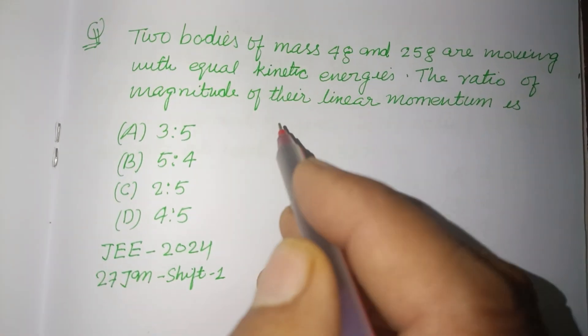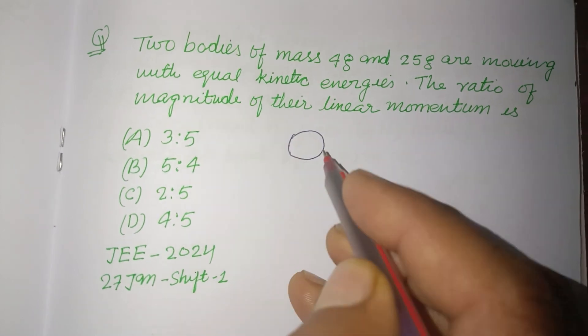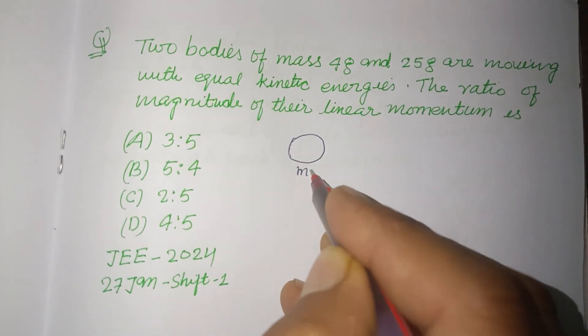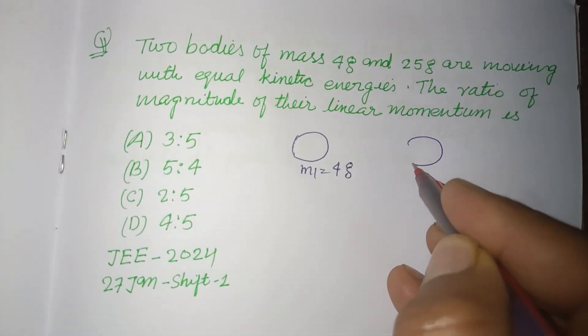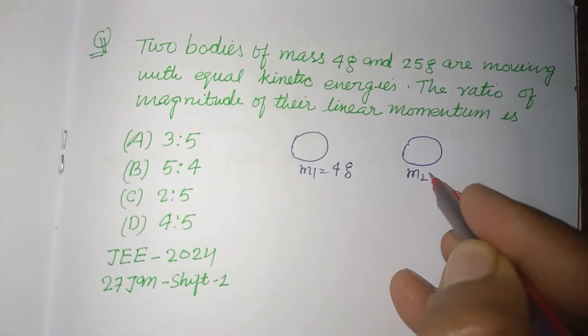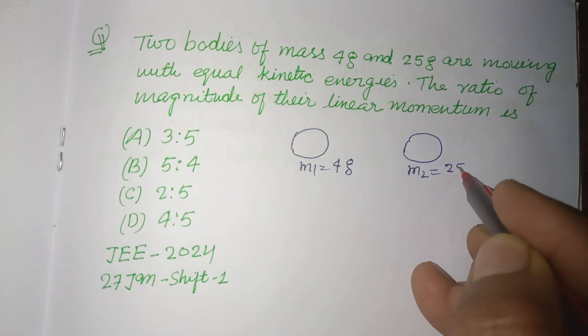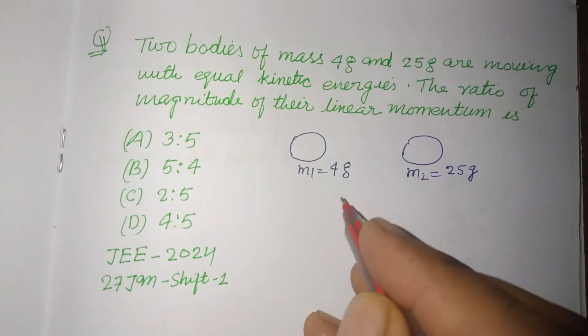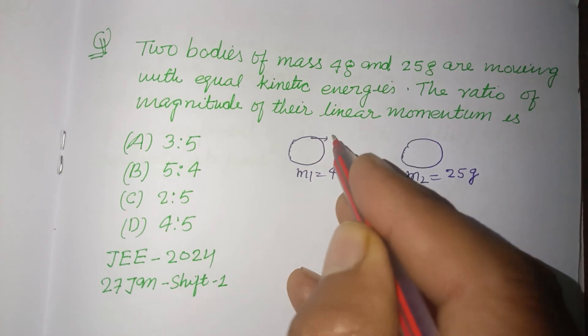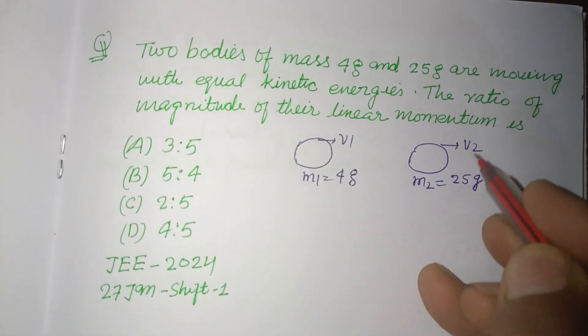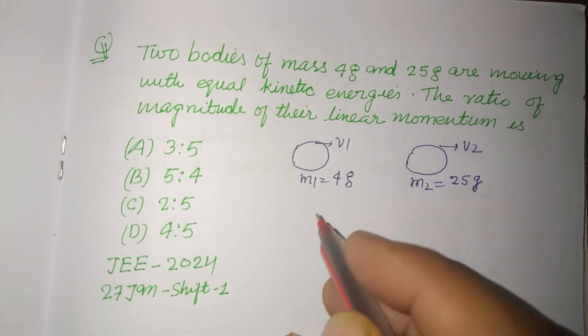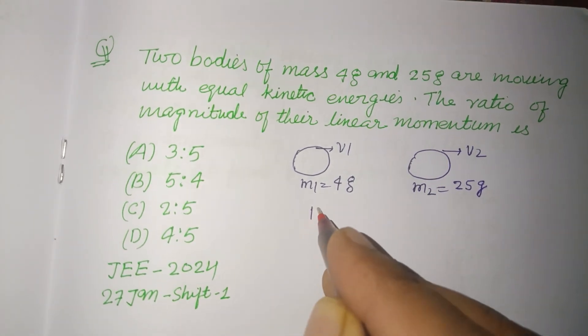So students, here are two bodies. Mass m1 is 4 gram and this is another body with mass m2 equal to 25 gram. Here velocity of this body is v1 and this is v2. Since they have equal kinetic energy, K1 equal to K2.